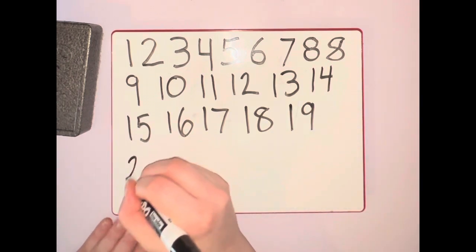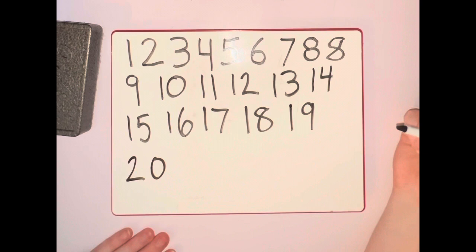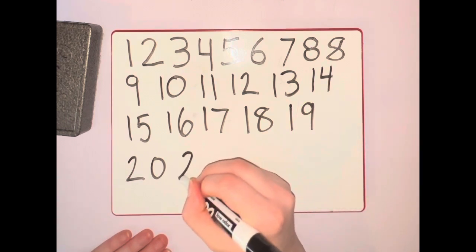Twenty is two, zero. Twenty-one is two, one.